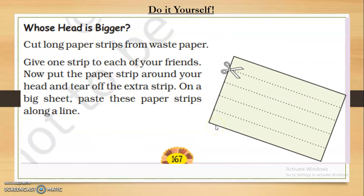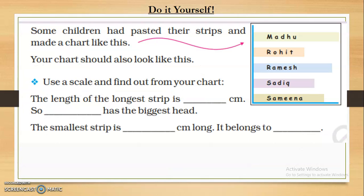This is a do-it-yourself activity. The teacher showed you with the help of chart paper — you have to make a strip, wrap it around your head, and then cut it. Be careful when using scissors. The teacher also showed you how to fold the paper and cut it with a scale or ruler to be safe. Check your family members and come to a conclusion about who has the biggest and smallest head in centimeters.